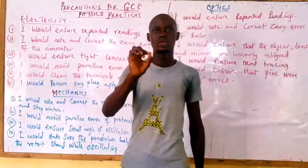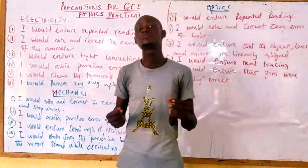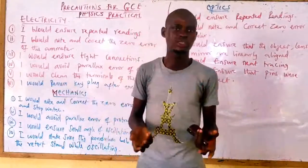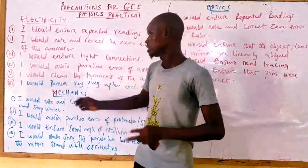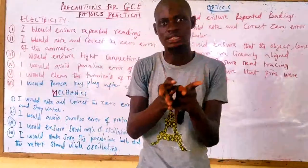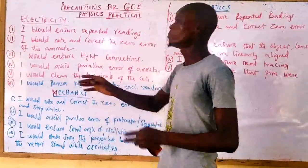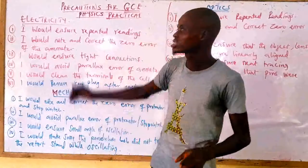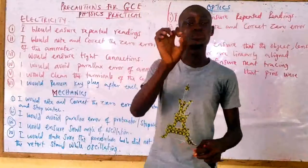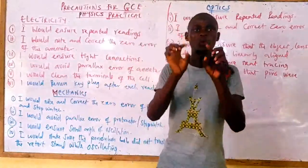The next precaution is: I would clean the terminals of the cell. If you don't clean the terminal of the cell before it is used, it might lead to cell defects like polarization and local action. The next precaution is: I would remove the key plug after each reading. If you don't remove the key plug after each reading, the battery will run down, and when the battery runs down your readings will be defective. These are the precautions expected for electricity experiments.